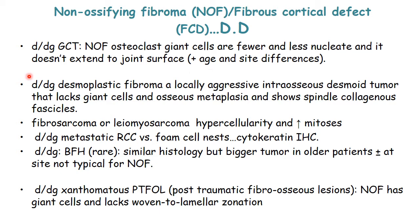The second differential, considering the spindle cell proliferation, is desmoplastic fibroma — a locally aggressive intraosseous desmoid tumor. In desmoplastic fibroma, the fibroblasts do not acquire the storiform pattern. In addition, desmoplastic fibroma has an infiltrative border with excessive collagen deposition. It lacks giant cells and osseous metaplasia, and shows spindle collagenous fascicles with no storiform pattern.